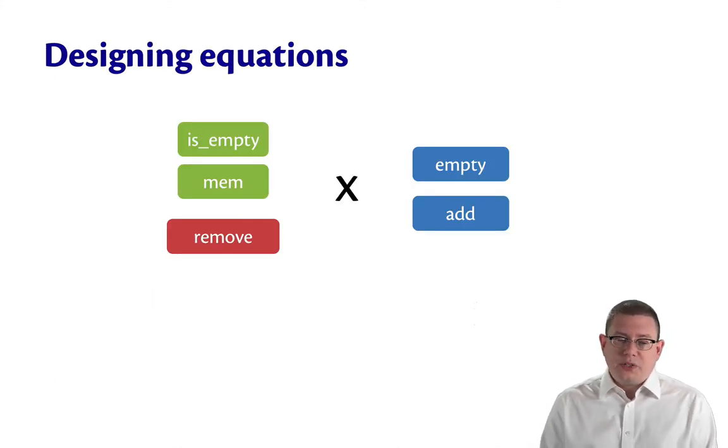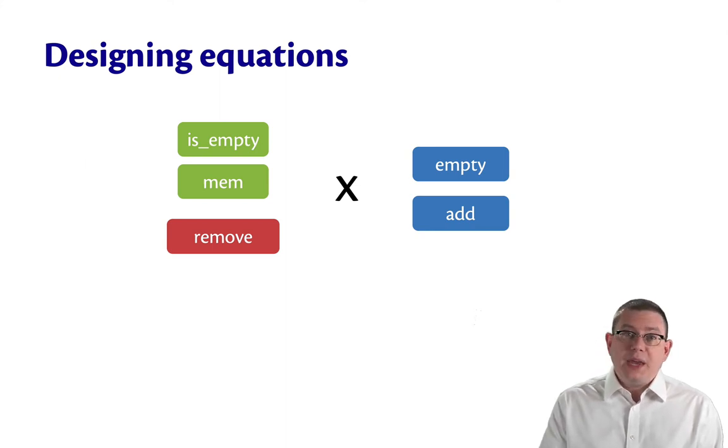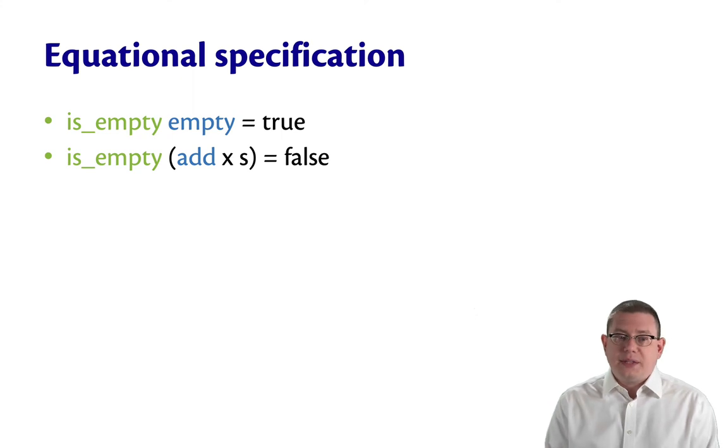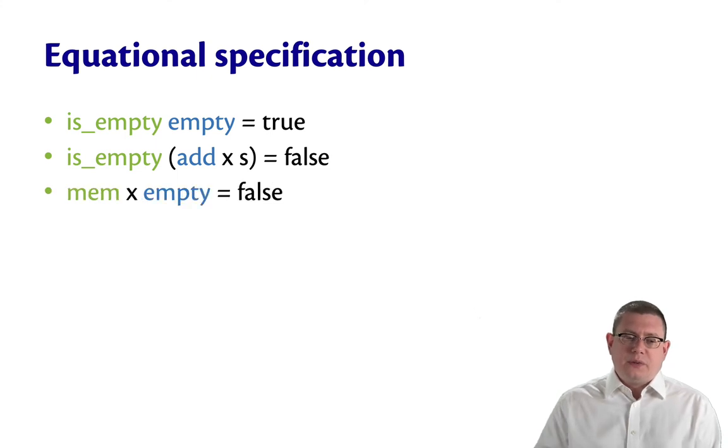So how do we design equations here? Well, we take this cross product. is_empty and mem are our queries. remove is our manipulator. empty and add are our generators. So we just start picking pairs from this cross product and thinking about what the equation should be for that pair. Let's do that. The empty ones are the easy ones. These correspond to things we've seen already with stacks and queues. What's the result of mem on an empty set? Well, x can't be the member of an empty set so that's got to be false.